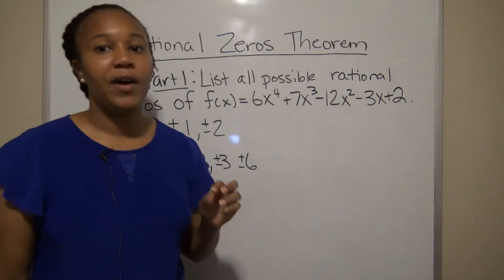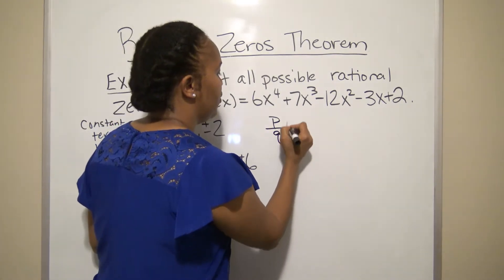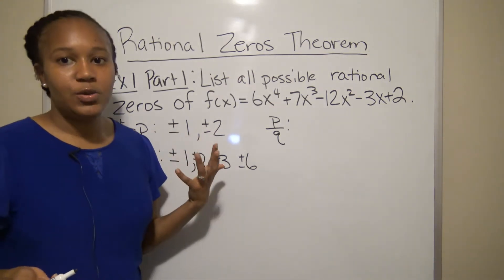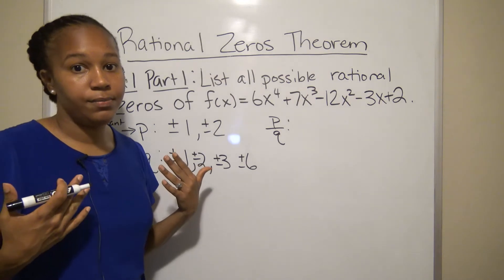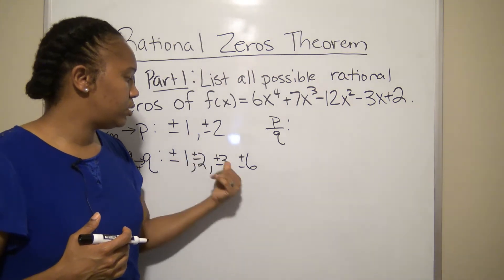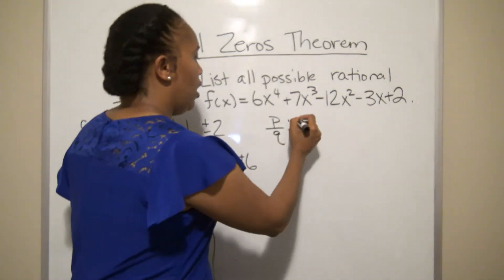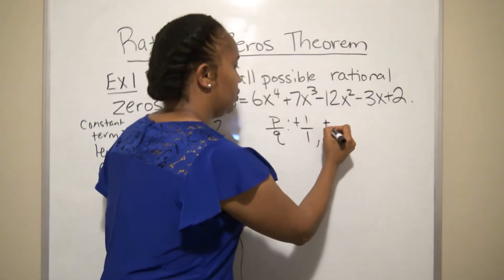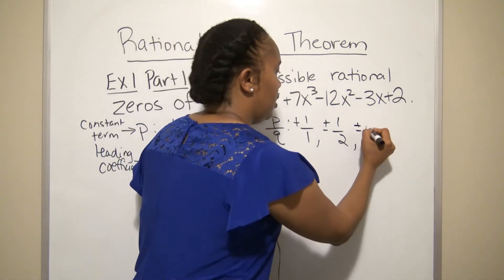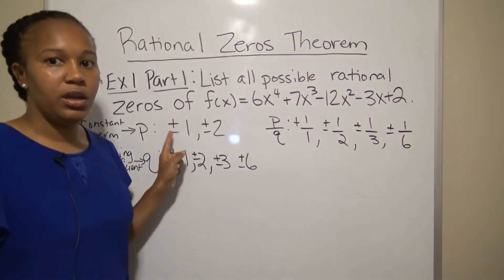Now to find every possible rational zero, take every possible fraction p over q. I like to take the first p and write it over each of the q's, then take the second p and write it over each of the q's. So that gives: ±1/1, ±1/2, ±1/3, ±1/6.